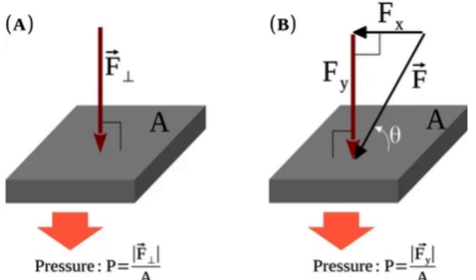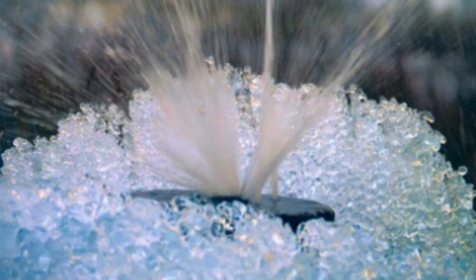Increased pressure with depth: confining pressure increases with depth within the Earth. This phenomenon is known as the lithostatic gradient. The deeper you go, the greater the pressure. The lithostatic gradient varies depending on factors like rock density and the distribution of overlying material.